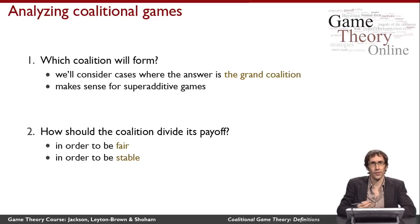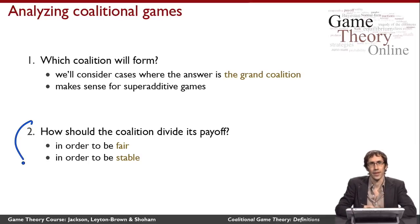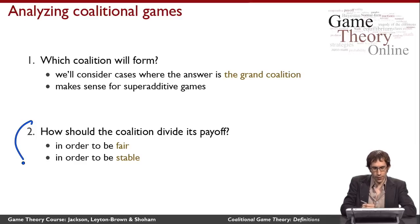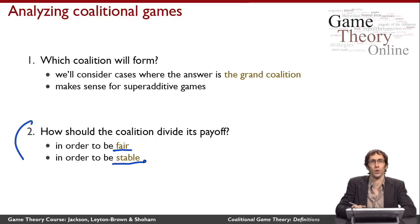Notice that the super additivity assumption implies that the highest payoff — at least the weakly highest payoff — is achieved by the grand coalition. So in a super additive game, it's natural to think the grand coalition would want to form. In answer to the first question, we're going to tend to assume the grand coalition forms, and focus on how the coalition ought to divide its payoff. We'll consider two ways of answering that: first, how it ought to divide its payoff if concerned with fairness; and second, if concerned with stability — meaning everybody would be willing to form the coalition rather than forming smaller coalitions to achieve higher value for themselves. We'll look at all of this in the videos that follow.